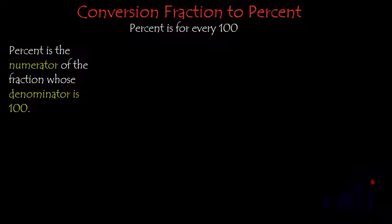Hi, so this is the second video on percent in which we will learn how to convert fractions into percent. In the last video, we found that percent is actually the numerator of a fraction whose denominator is 100. And where does it come from? It comes from the definition of percent. Percent is for every 100.